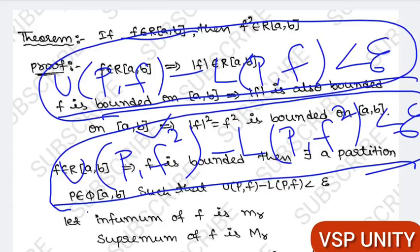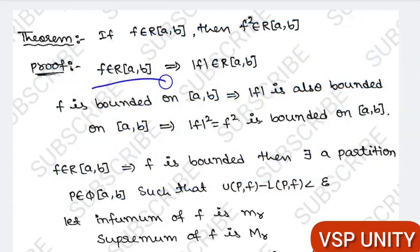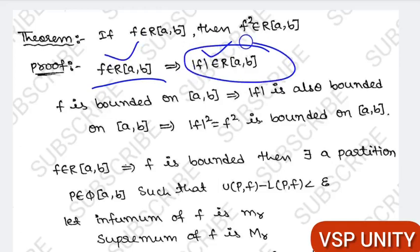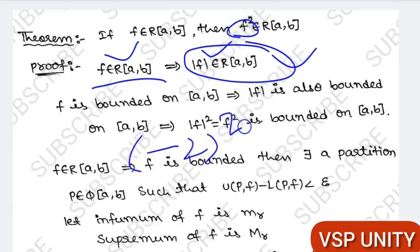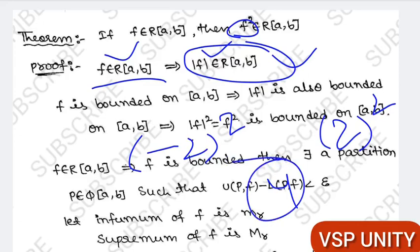Now let us start the theorem. f is Riemann integrable on [a, b]. In a previous theorem, I explained that if f is Riemann integrable, then |f| is also Riemann integrable. Why are we considering |f| here? Because we need to show f² is Riemann integrable. Note that (−2)² and (+2)² both equal 4, so whether f is negative or positive, f² is always positive. That's why we consider both f and |f|.